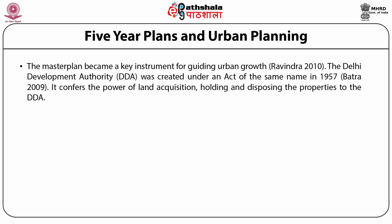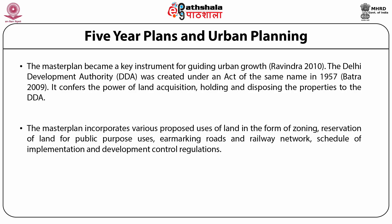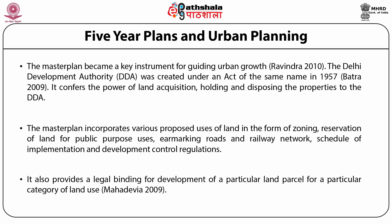The master plan became a key instrument for guiding urban growth in Delhi. The Delhi Development Authority was created under an act of the same name in 1957, conferring the power of land acquisition, holding, and disposal of properties to the DDA. The master plan incorporates various proposed uses of land in the form of zoning, reservation of land for public purposes, earmarking roads and railway networks, schedule of implementation, and development control regulations. Proposed land use puts each parcel of land under a specific land use category and provides a legal binding for development.